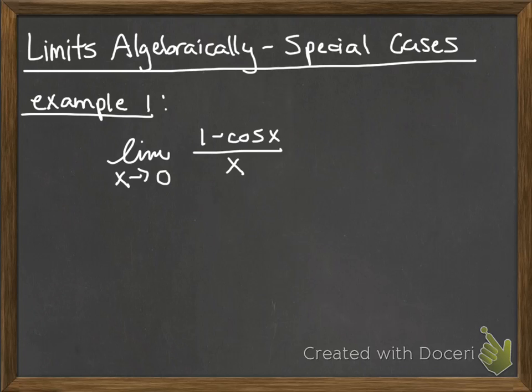So this problem says, what is the limit as x approaches 0 of 1 minus cosine x over x? Notice that if I go ahead and plug in 0 into this x, that's a problem. I can't divide by 0. So my two options are going to be to either factor,